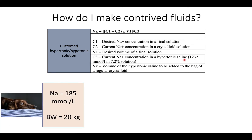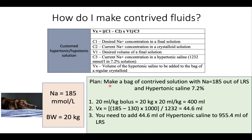Let's apply this math to the case of Max. His sodium concentration on blood work was 185 millimoles per liter, and he was hypovolemic — in shock — so we wanted to give him a fluid bolus. We didn't want to give him regular LRS because that could drop his sodium too fast, leading to cerebral edema. His weight is 20 kilograms. So here's how we calculated how to make a bag of contrived solution with sodium of 185 using LRS and 7.2% hypertonic saline.